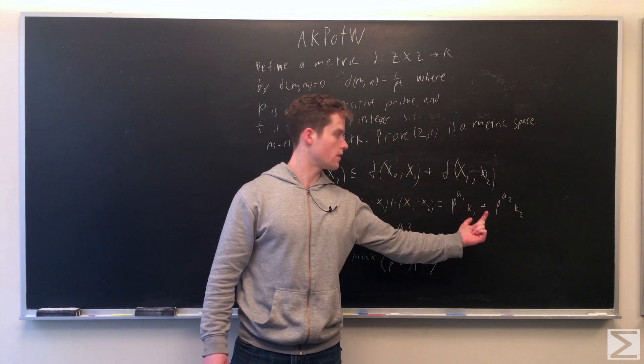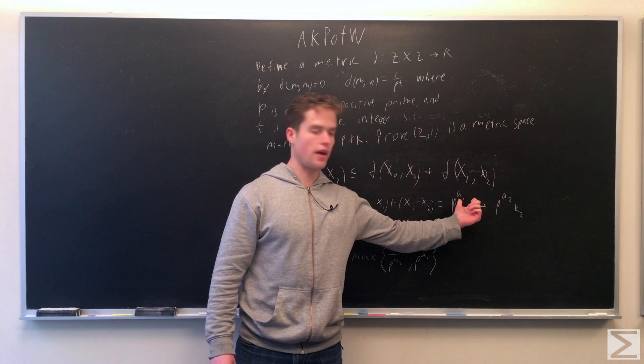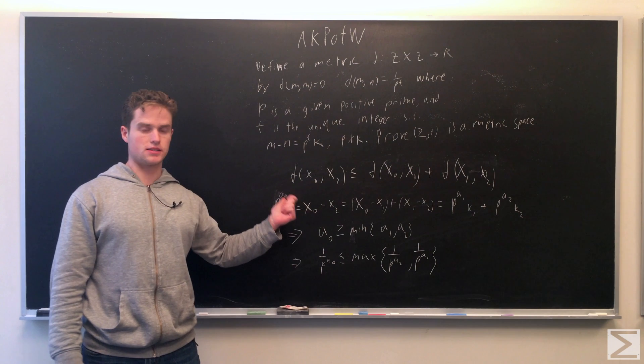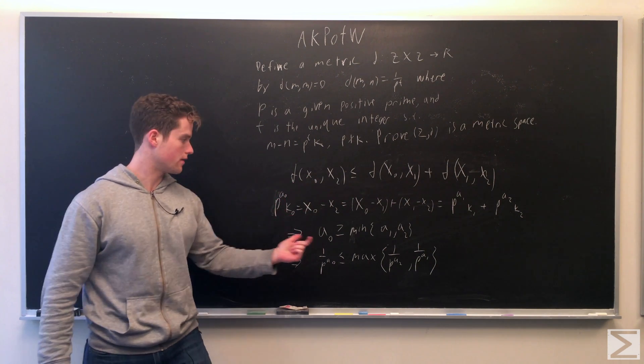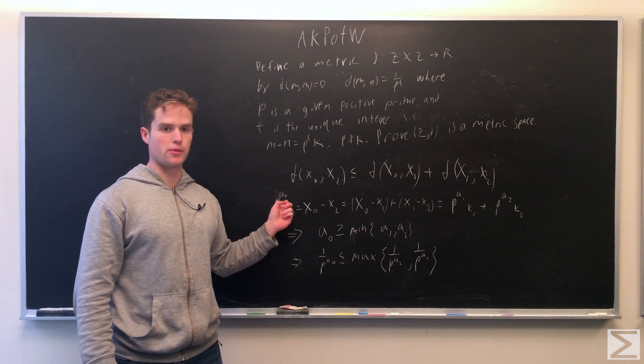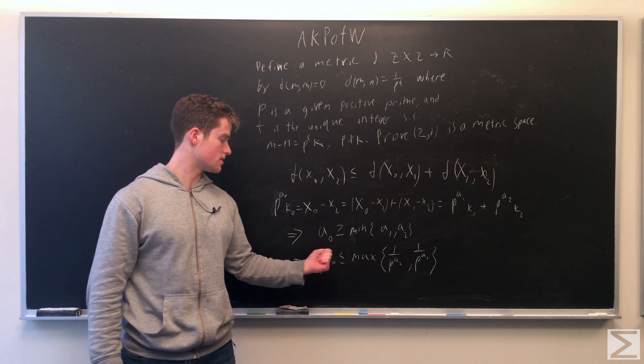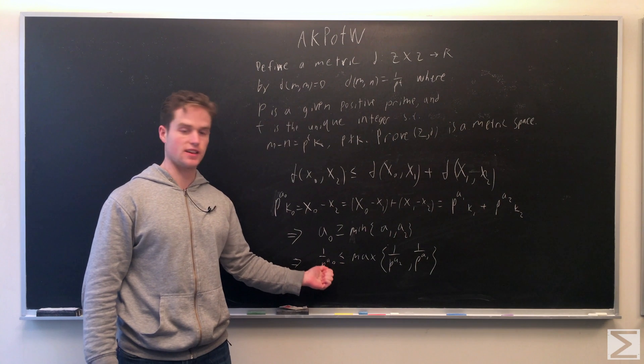But note on this right side we can factor out whichever of a1 or a2 is lower. We can factor out p to that power. And so p to the a0 must be divisible by the minimum power, so a0 must be greater than or equal to the min of a1, a2.